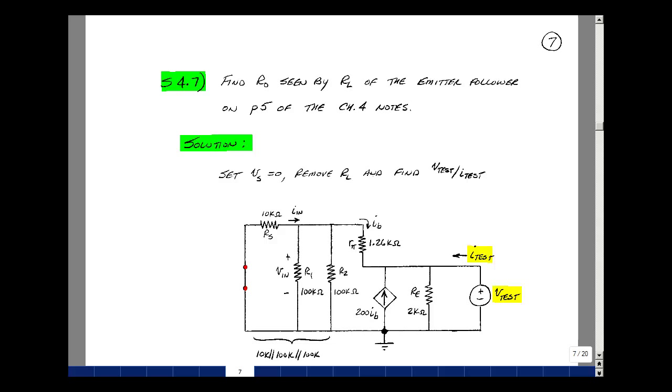This lesson deals with supplemental problem 4.7. You can find this problem in the ECE-201 ebook in the Chapter 4 Supplemental Problems on page 7. Let's find the Thevenin resistance seen by the load resistor R_L in the emitter follower example we did on page 5 of the Chapter 4 notes.